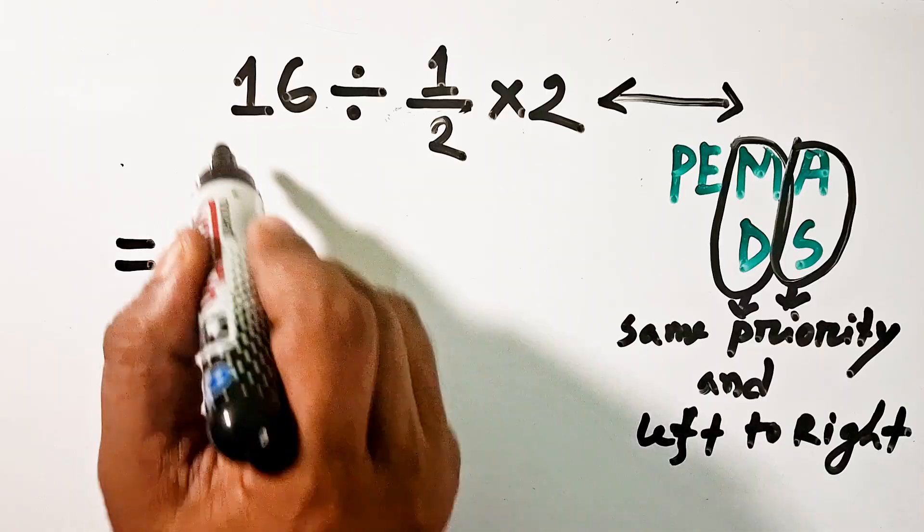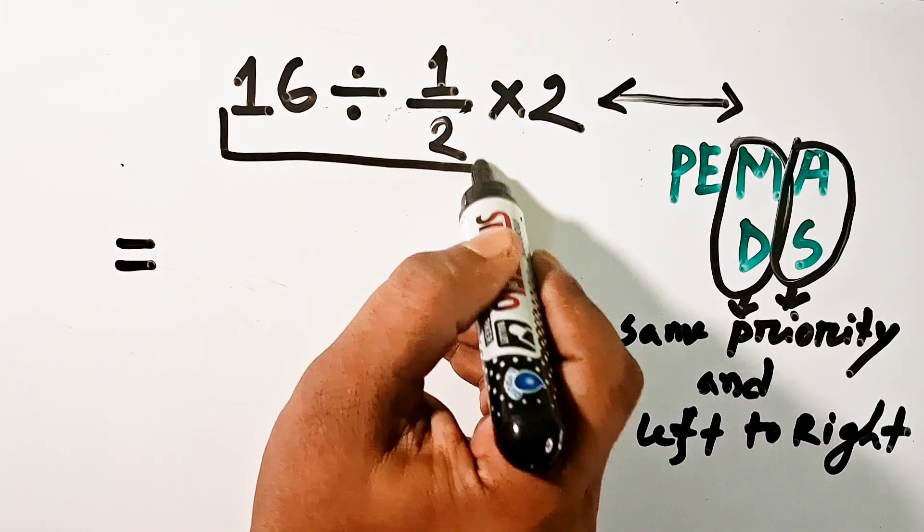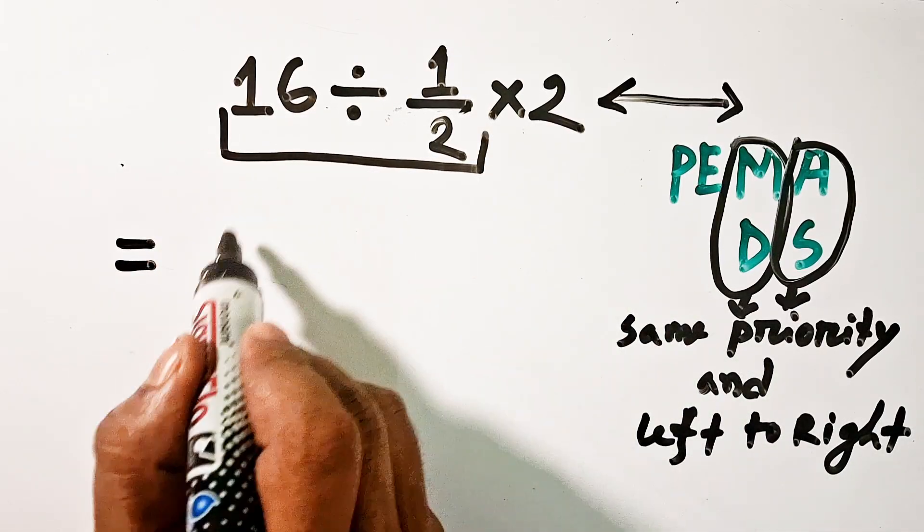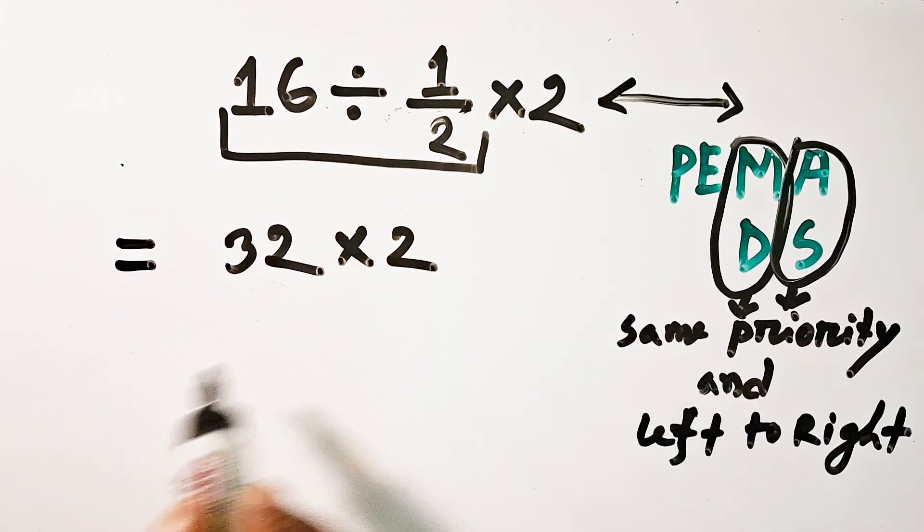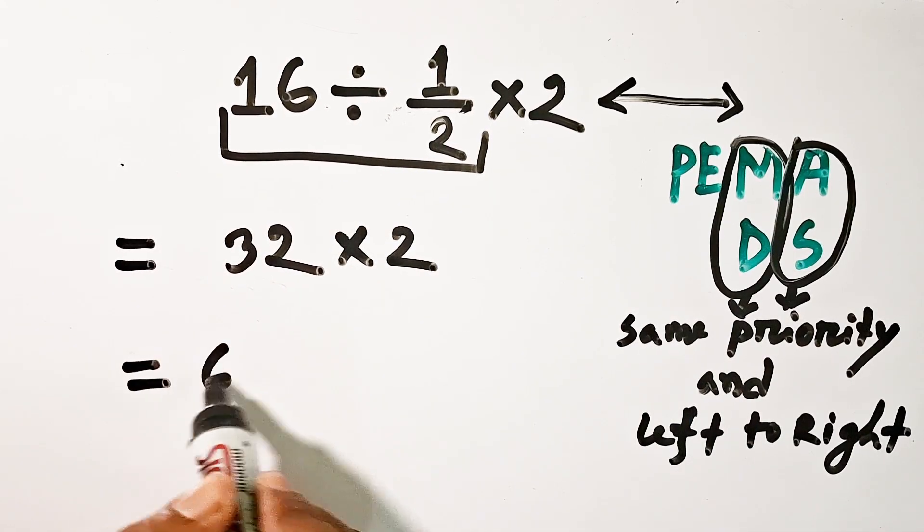16 divided by half is equal to 32, into 2 is equal to 64.